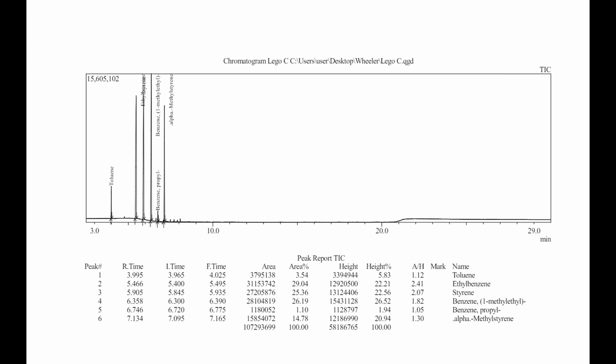An azeotrope is a mixture of two or more substances that have a constant boiling point and composition through the distillation process. This occurs because vapor has the same composition as the liquid mixture, making it difficult to separate the components by simple distillation. A classic example of azeotropic mixtures are ethanol and water.